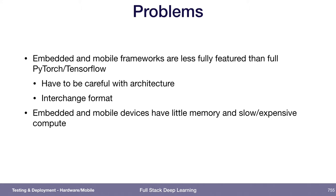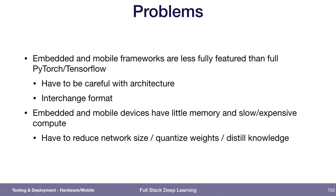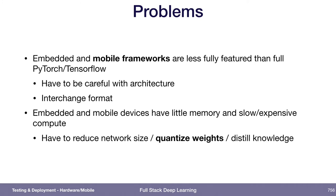Embedded and mobile devices also have way less memory and slower processors than servers. Because of this, we might have to reduce network size. We probably want to quantize our weights, which means reducing the precision of the numbers, and potentially train a whole new network that distills the knowledge of our full network that doesn't fit on the smaller device. To start with, we can talk about mobile frameworks and weight quantization.